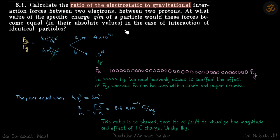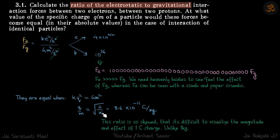The second question asks: what is the ratio q/m when these forces are equal? When Fe equals Fg, kq² becomes equal to Gm². Solving for q/m gives the square root of G/k.